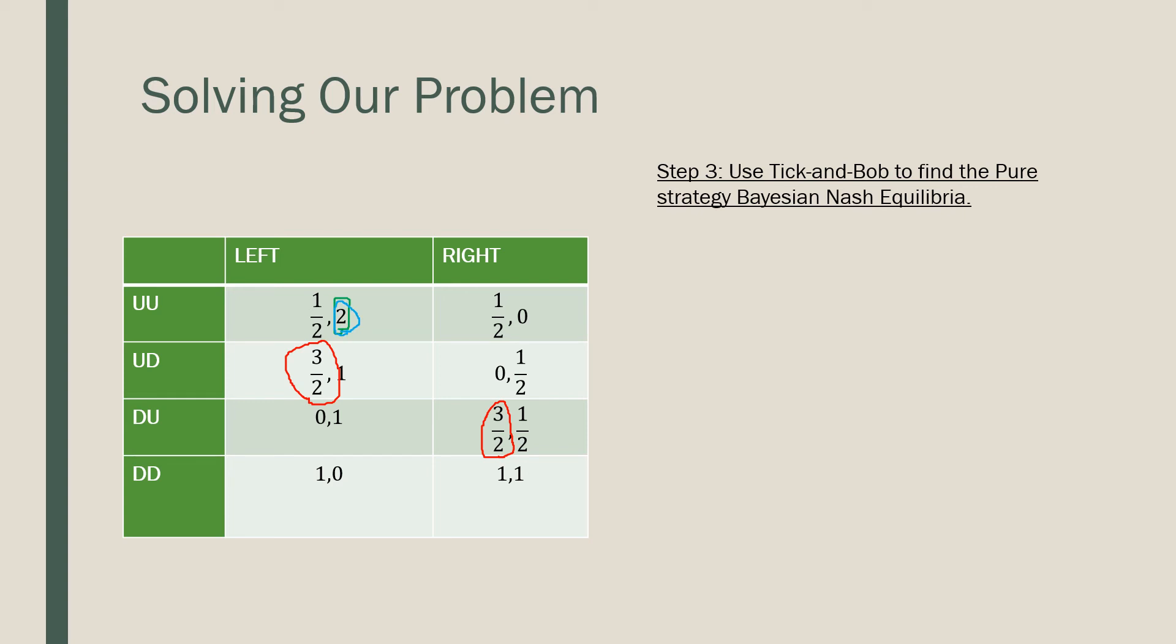If UD is picked, again we should be picking left here. Let's say DU is picked. We see there's a bigger payoff from picking left, so we're going to pick left. And if DD is picked, there's a bigger payoff from playing right.